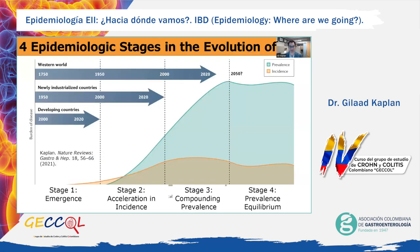In order to understand the origin of IBD, we must recognize that the evolution of IBD involves four epidemiological stages. Stage 1: emergence. Stage 2: great acceleration in incidence. Stage 3: compounding prevalence. Stage 4: prevalence equilibrium. Every country in the world is currently in one of the first three epidemiological stages, and over time will shift through all stages.